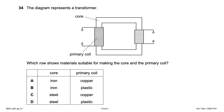The diagram represents a transformer with core and primary coils shown. Which row shows the suitable materials? The core must be made of iron, eliminating options C and D. The primary coil must be copper for good conductivity — iron core and copper coil, option A.